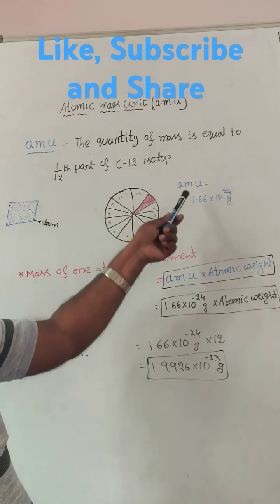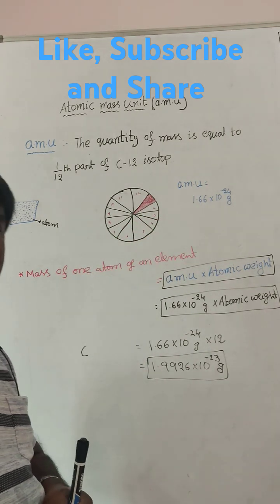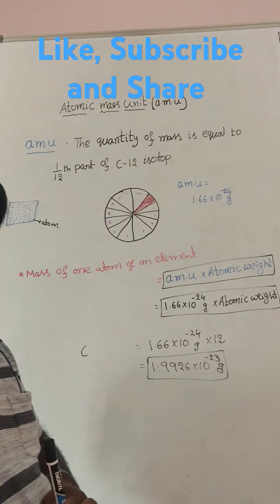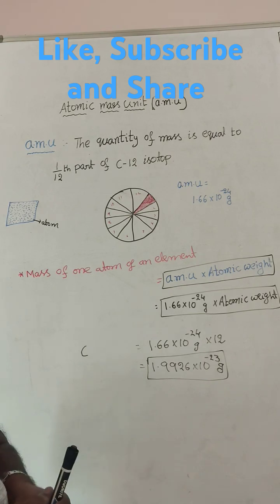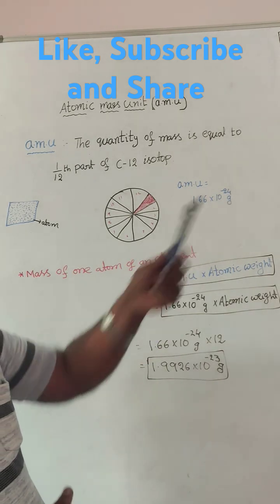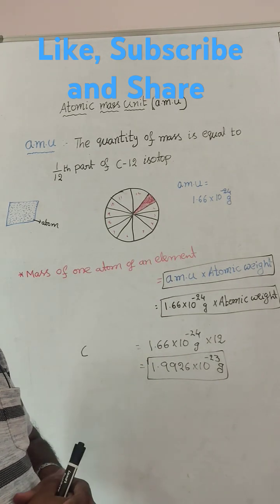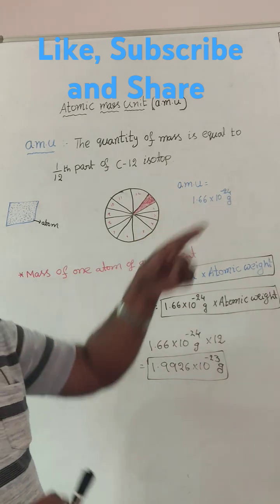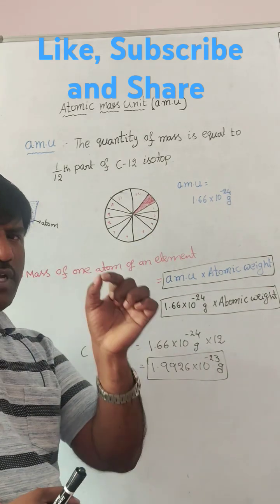The value of atomic mass unit is 1.66 into 10 to the power of minus 24 grams. Already we know mass number of proton neutron. That value only 1.66 into 10 to the power of minus 24 grams, that is 1 unit value.